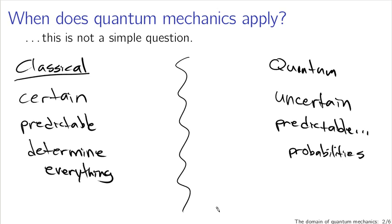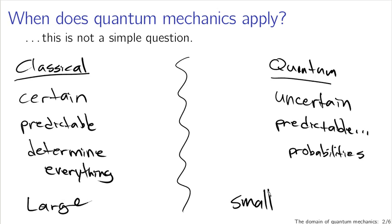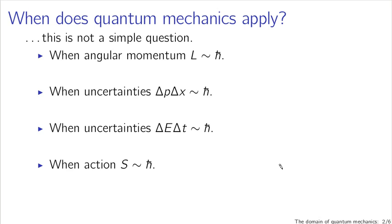The boundary between these two realms — when the uncertain and probabilistic effects of quantum mechanics start to become relevant — is really a dividing line between things that are large and things that are small, and that's not a particularly precise way of stating things. Doing things more mathematically, quantum mechanics applies when angular momentum L is on the scale of Planck's constant or the reduced Planck's constant h-bar.